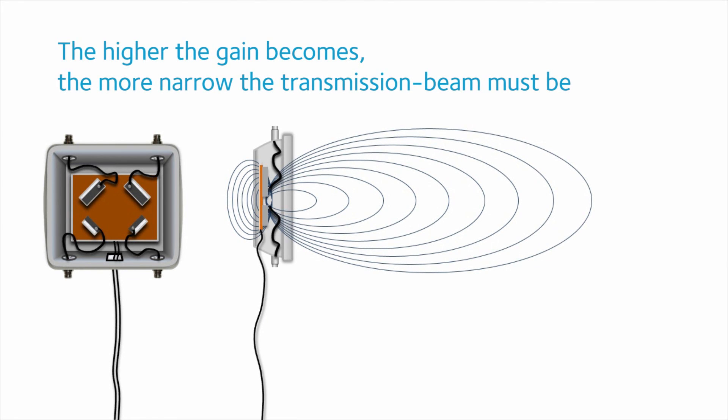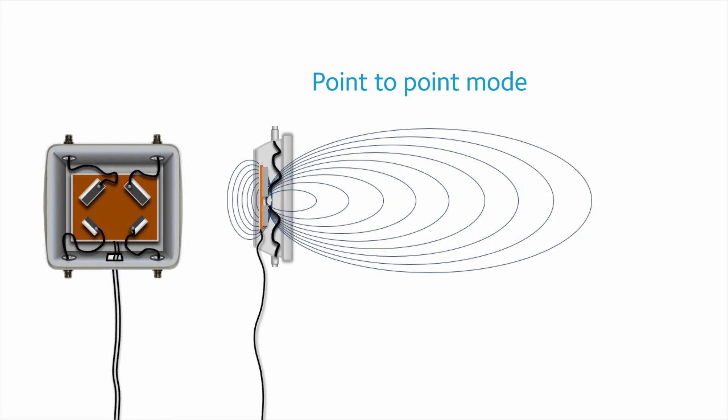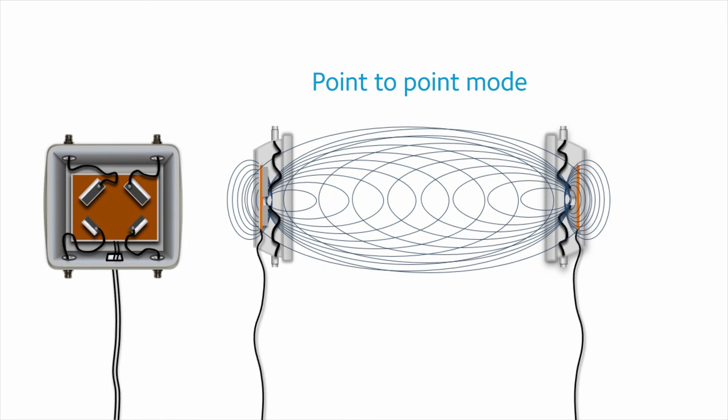This is the operating mode of the access point when no external antennas are used. The higher the gain, the more directional the beam must be. This means we must align another AP directly in front to receive the narrow beam.